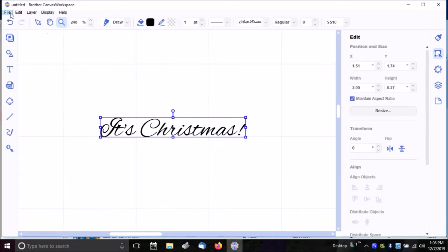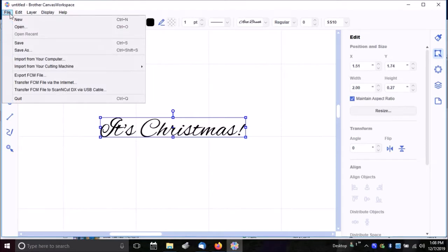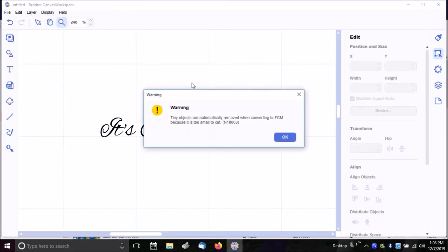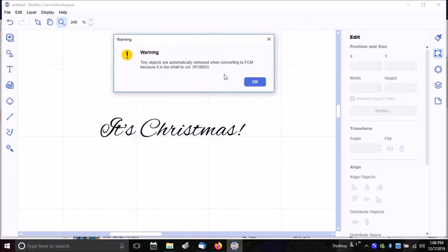Let's go ahead now and send this to the cutting machine by transfer the FCM file via the internet. And it's saying that tiny objects are going to be removed. It's probably going to be these dots right here. So I'll just click OK.